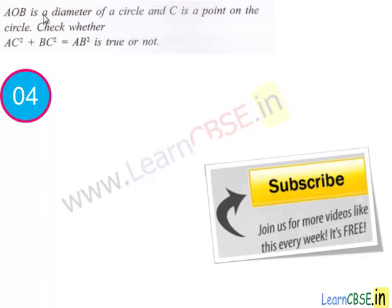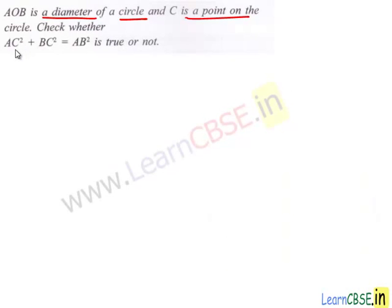Let's move to the next question. Here we have AOB is a diameter of a circle and C is any point on the circle. We have to say whether square of AC plus square of BC is equal to AB square. We have to say whether it is true or not.